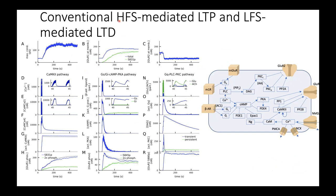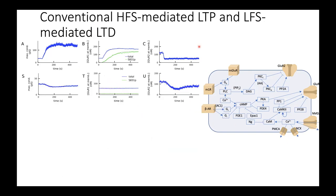We also found that the unusual shape - LTD lasting a long time - may be due to SK channels: with a single burst, without SK activation it returns to baseline quicker than in the presence of SK channel activation. For conventional high-frequency stimulation to the spine we get LTP, and for low-frequency stimulation we get LTD. Both neuromodulatory pathways were needed; without them some potentiation occurs but it may not be long-lasting.